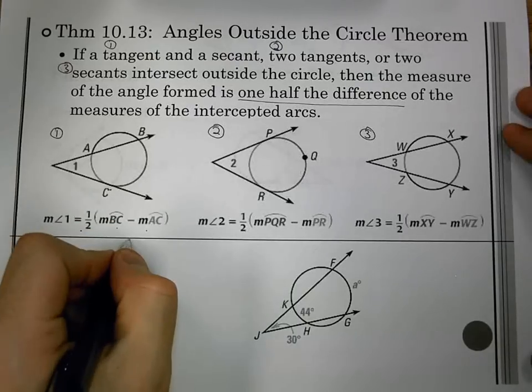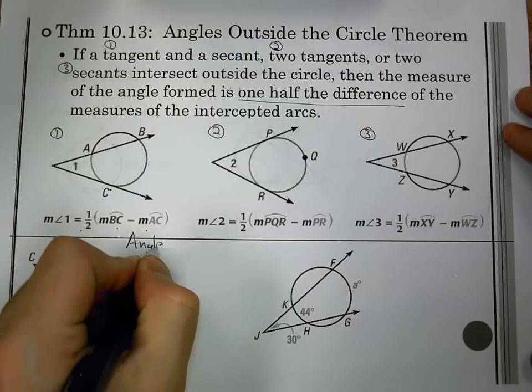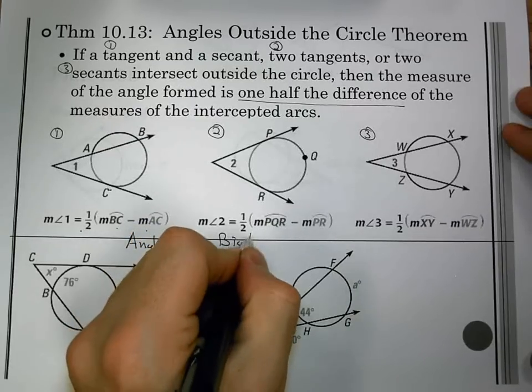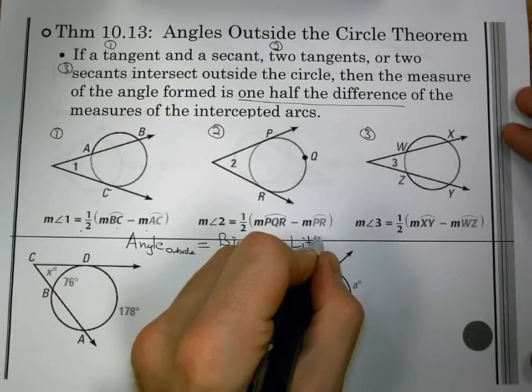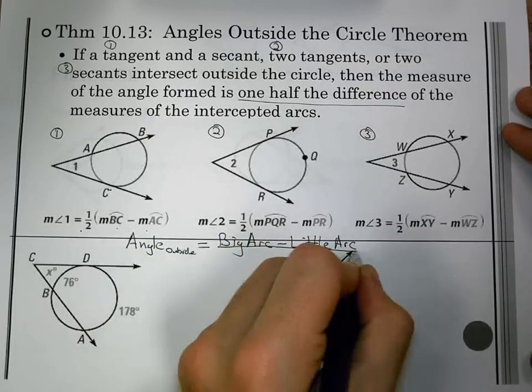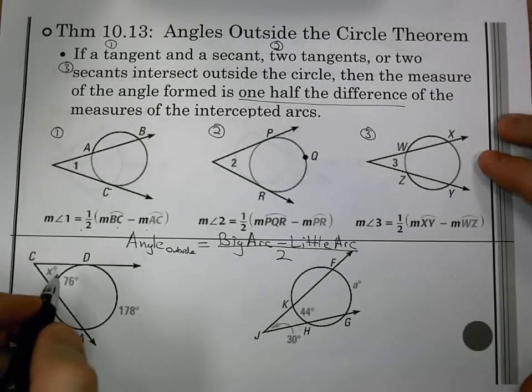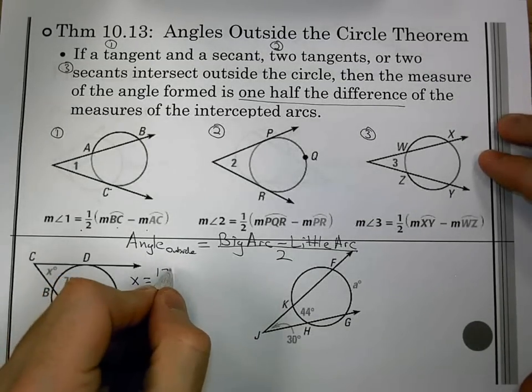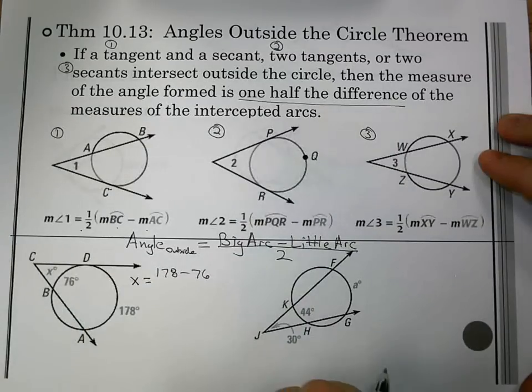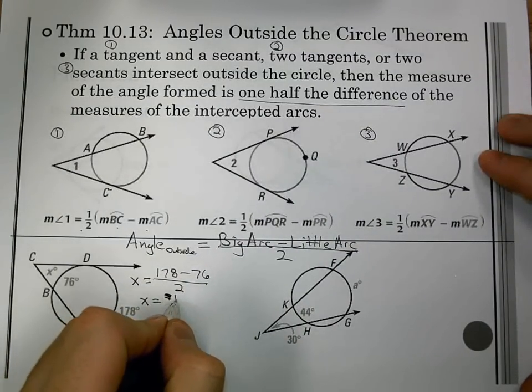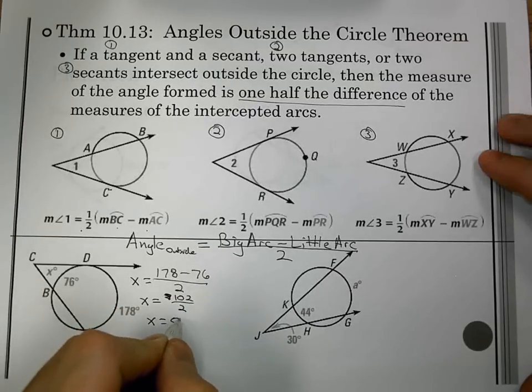We can really sum this one up because the angle that's outside is equal to the big arc minus the little arc divided by 2. Now, you're not going to do the little arc minus the big arc because that will give us a negative value, but it's big arc minus little arc divided by 2. So let's try that. In our first one, I have X as my angle, big arc is 178 minus 76, little arc, divided by 2, gives me 102 divided by 2 or 51 degrees.